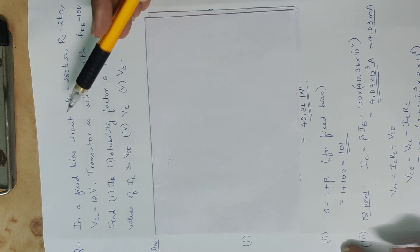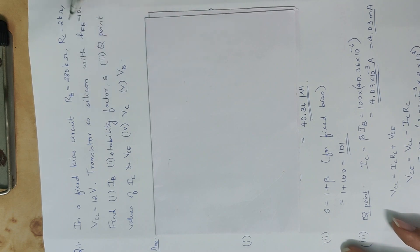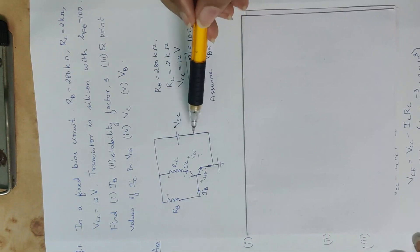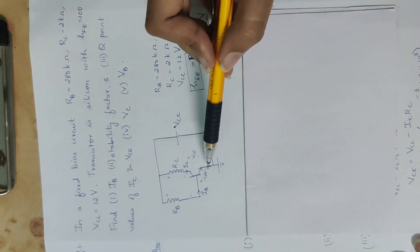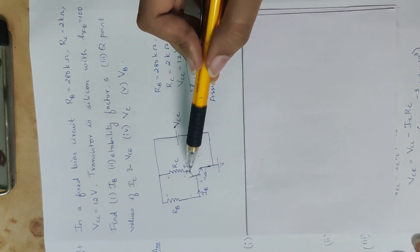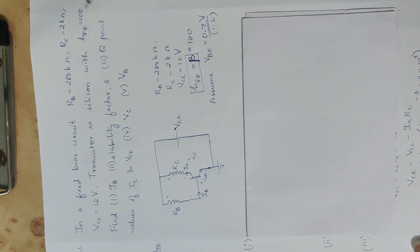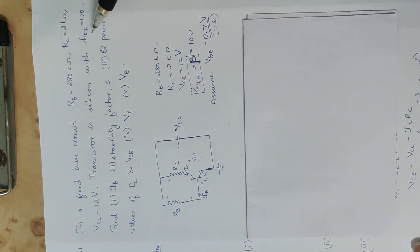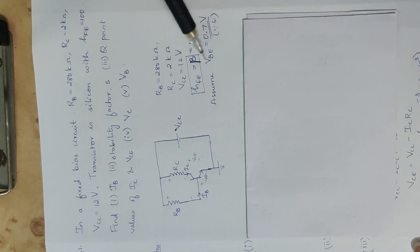Now we have the fixed bias circuit diagram with Rb, Rc, Vcc, and terminals labeled: plus-minus VCE, plus-minus VB, base current IB, and collector current IC. HFE is the H-parameter — we will study the H-parameter model in the second half. HFE is equal to beta, so beta equals 100.